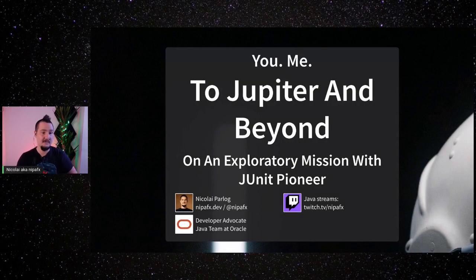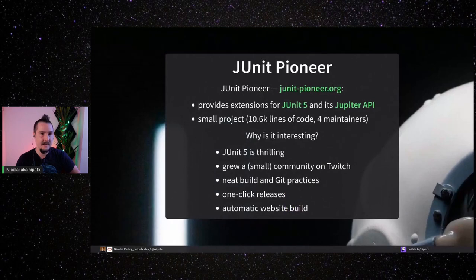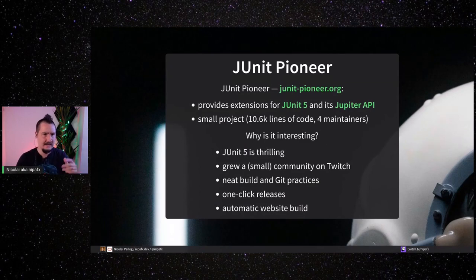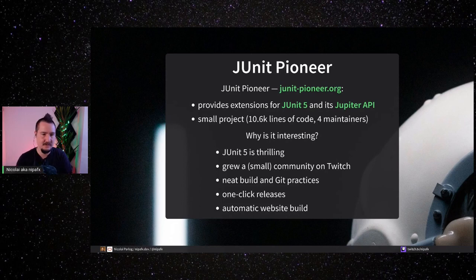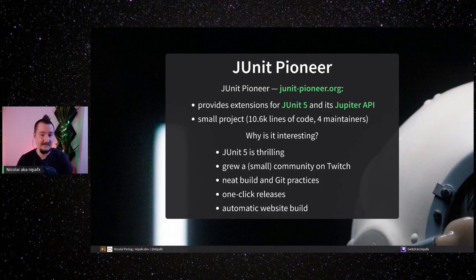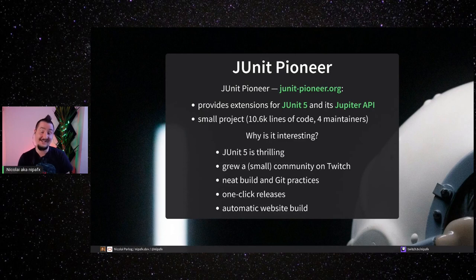So let's start. To Jupiter and beyond — we're going on an exploratory mission with JUnit Pioneer. You can go to jnpioneer.org. It provides extensions for JUnit 5, specifically its Jupiter API. It's a small project: we have ten and a half thousand lines of code, four maintainers. JUnit 5 is a really cool project to work with. We've grown a small community on Twitch, we have GitHub practices, one-click releases, and an automatic website build which occasionally fails but generally works great.